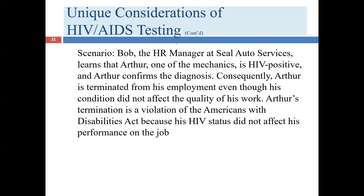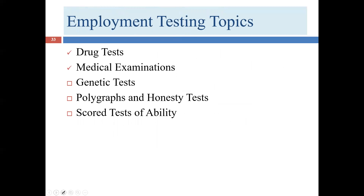Here's another example: Bob finds out that one of his mechanics is HIV positive. Subsequently, Arthur the employee is terminated, even though his HIV status would have no relevance to his ability to repair cars, and he was performing his job satisfactorily. Under these circumstances, Arthur can assert a violation under the Americans with Disabilities Act because of his HIV status. At this point, we're going to end our presentation. In our next presentation, we'll talk about genetic tests, polygraph and honesty tests, and scored tests of ability. As always, if you have any questions about the material we've covered, please feel free to come to my office hours. I appreciate your attention and I hope you have a wonderful day.